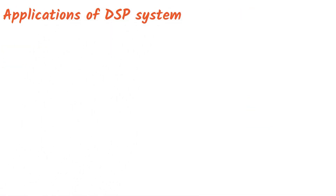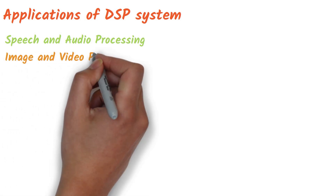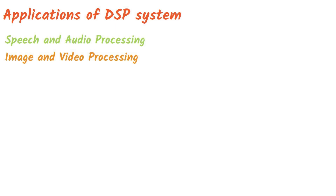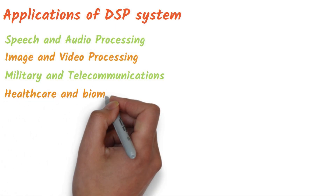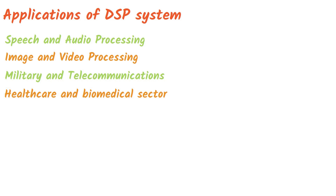We use digital signal processing in many areas: processing speech and audio, including speech recognition, analysis, noise filtering, and echo cancellation; processing image and video involving compression, enhancement, reconstruction, restoration, and phase detection; military and telecommunication applications such as sonar navigation, radar tracking, modulation, and demodulation; biomedical and healthcare, for example analysis of ECGs, EEGs, and X-ray signals; and consumer electronics, where most digital devices like smartphones, televisions, and digital cameras have a DSP embedded to accelerate their performance.